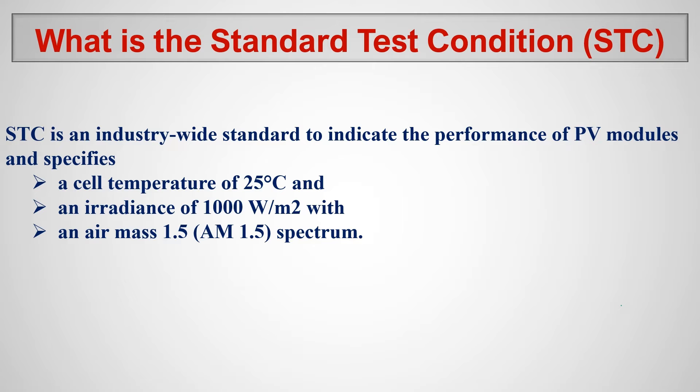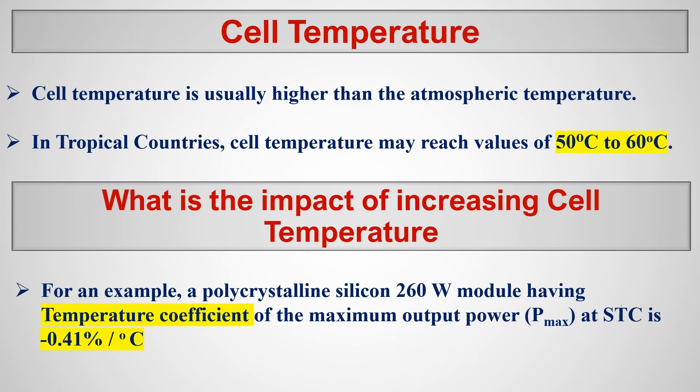Now let's look at what is the cell temperature. Many people do not know what is cell temperature. Cell temperature is different from the atmospheric temperature. Cell temperature is the temperature of the solar panels, each cell. Solar panel usually have like 36 cells or 48 cells or different number of cells.